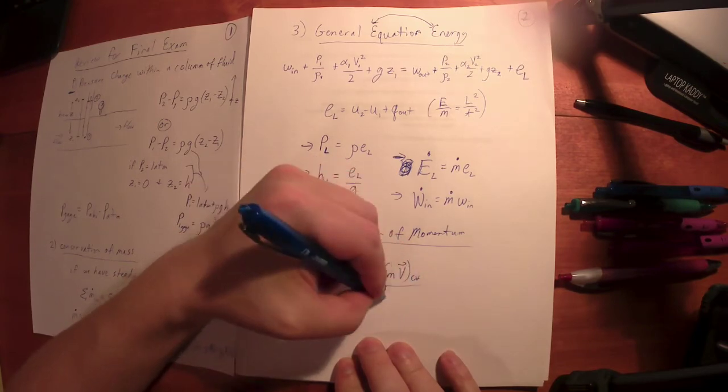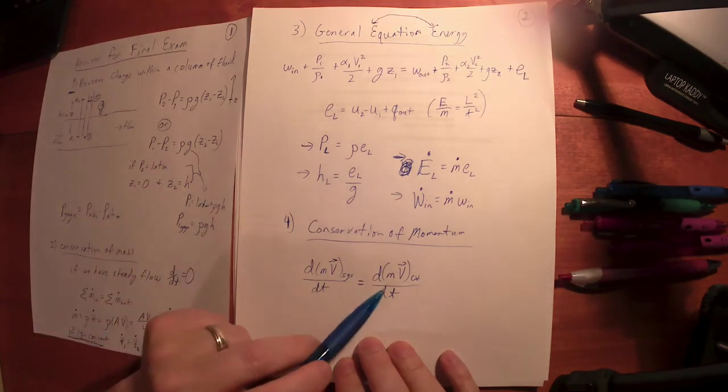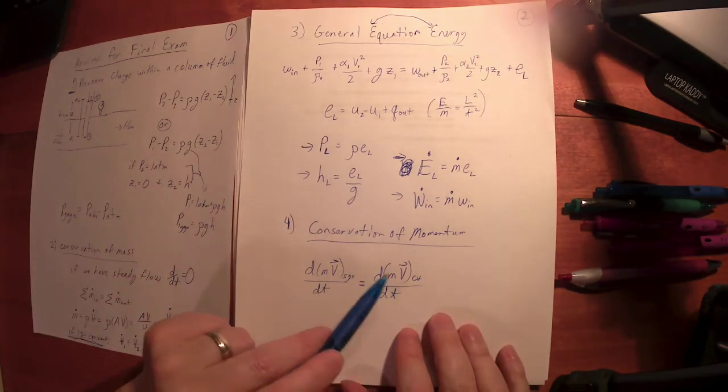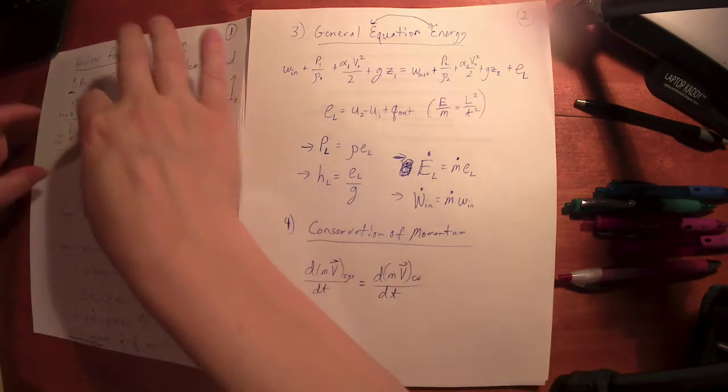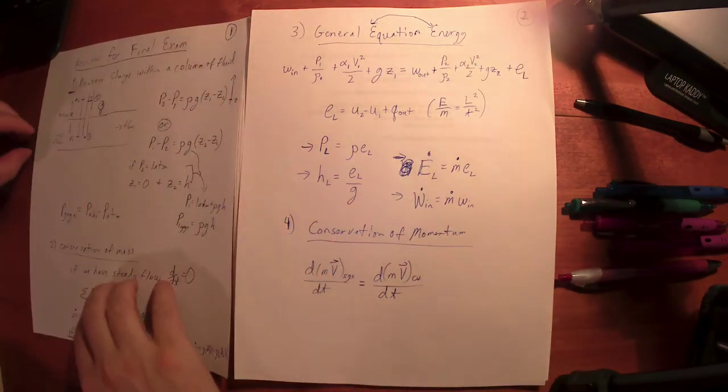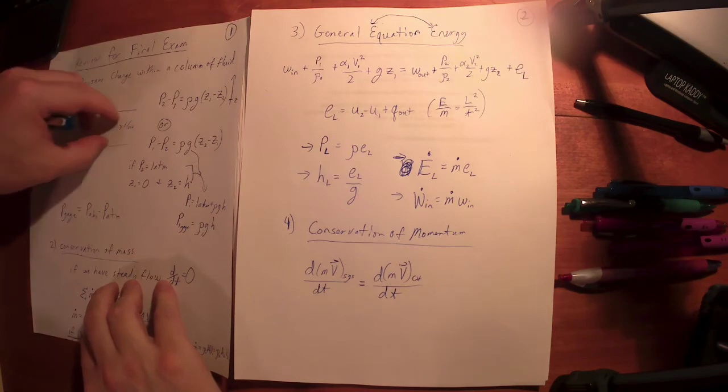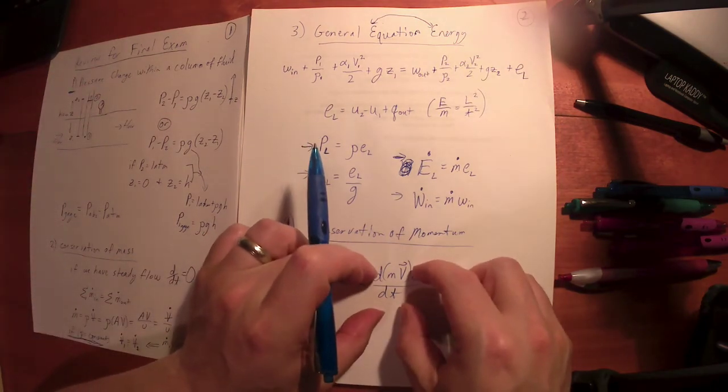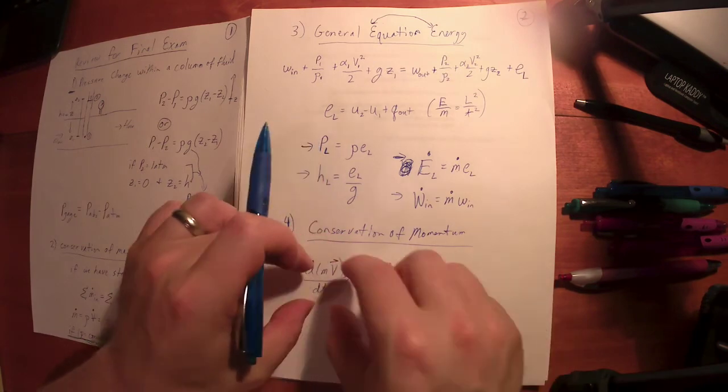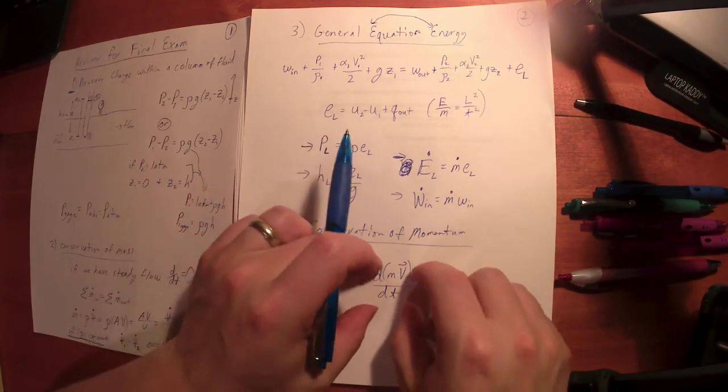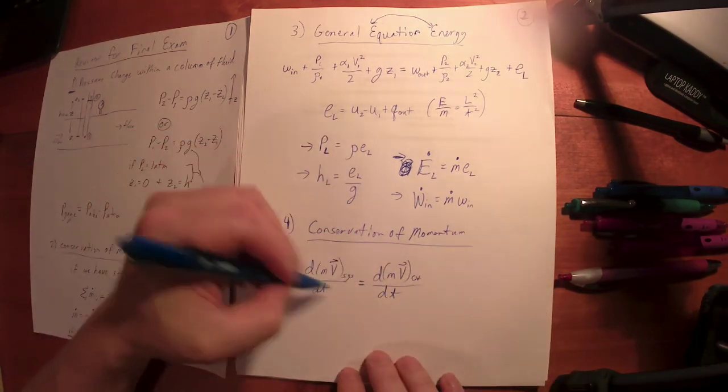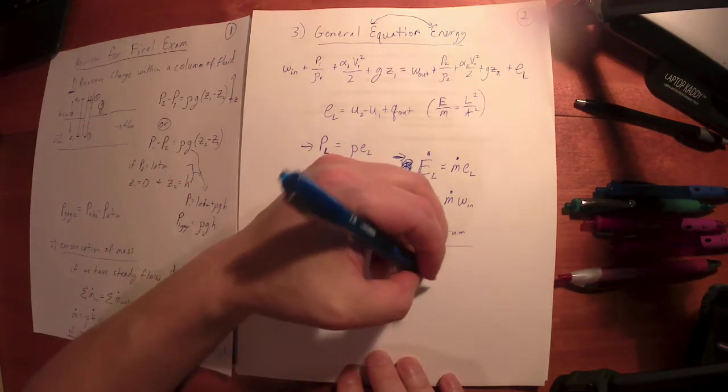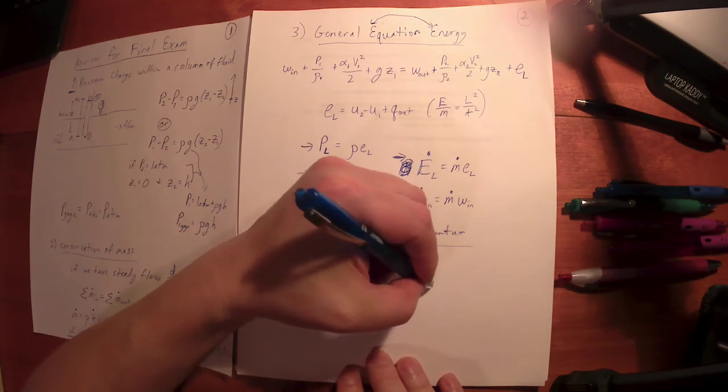But what we do know is I can normally measure the change in momentum for a control volume, some region in space, maybe a fitting or something like that. So if I just analyze some fixed piping system and not worry about the particles, each individual particle's momentum as it moves through, I can focus on this and I can probably quantify this. Even if I can't quantify this directly, I can probably quantify this.